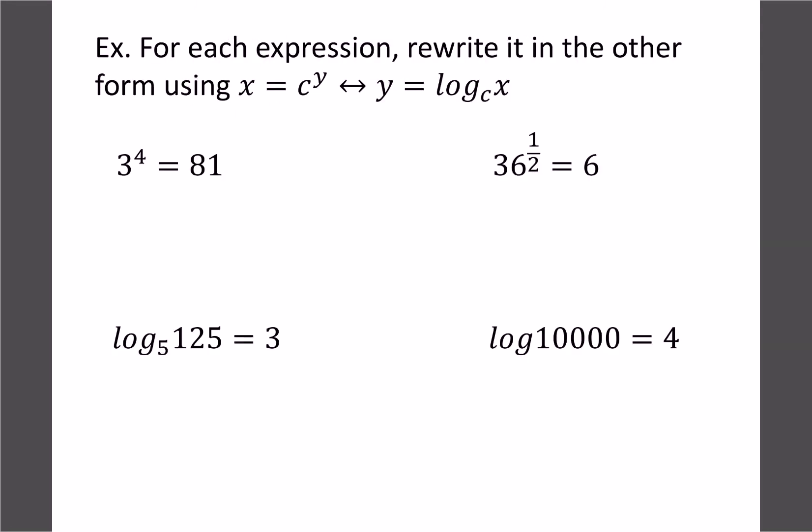Let's do a little bit of practice using this formula to trade back and forth. 3 to the 4th equals 81 as a log we'd write that as log base 3 of 81 equals 4. That means 3 to the power of 4 equals 81, so that's good. This next one would be log base 36 of 6 equals a half. That's true because 36 to the half is like square root of 36, so square root of 36 is 6.